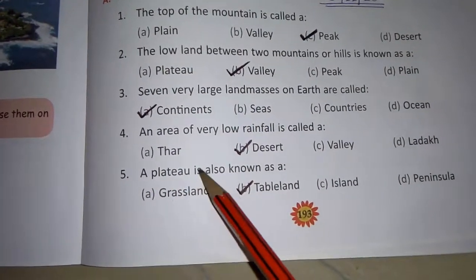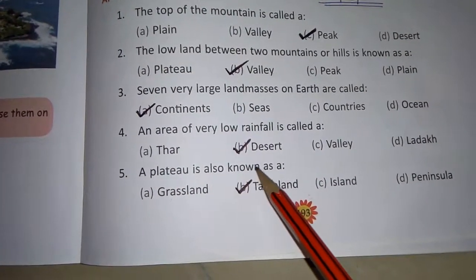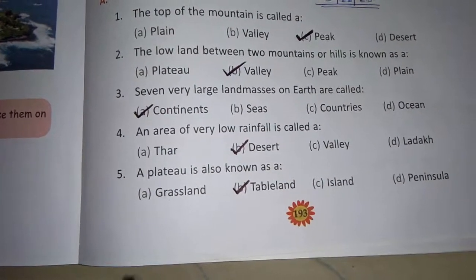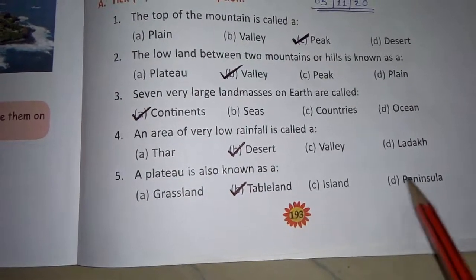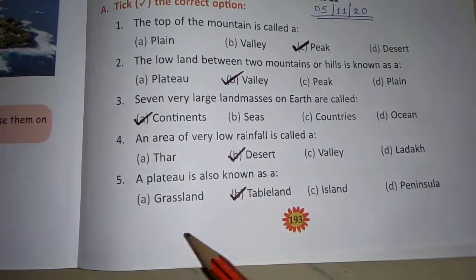Fifth, a plateau is also known as — grassland, table land, island, peninsula. Correct answer is table land.